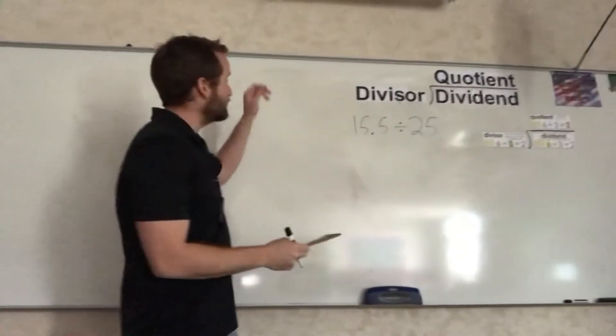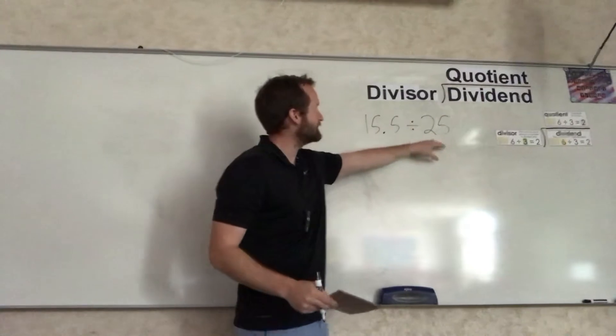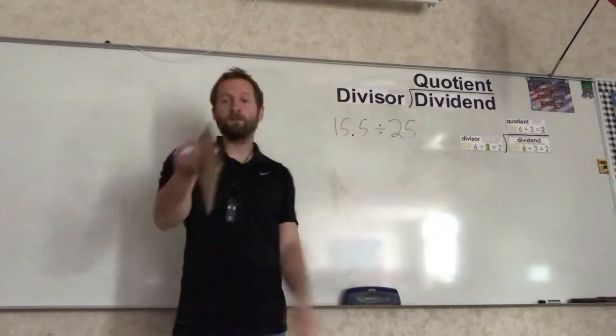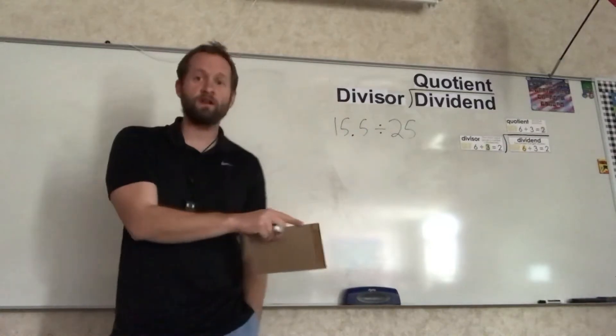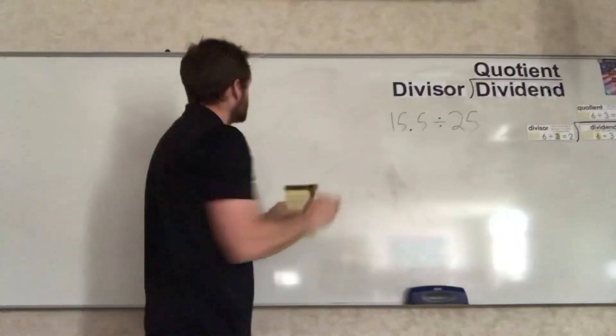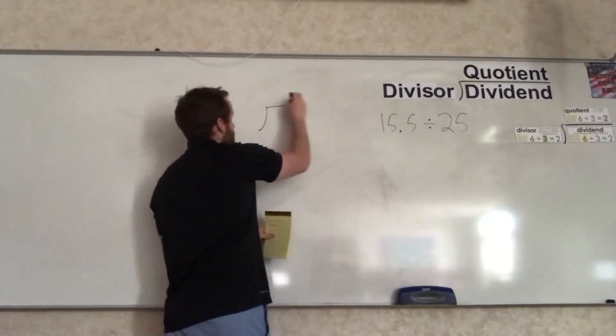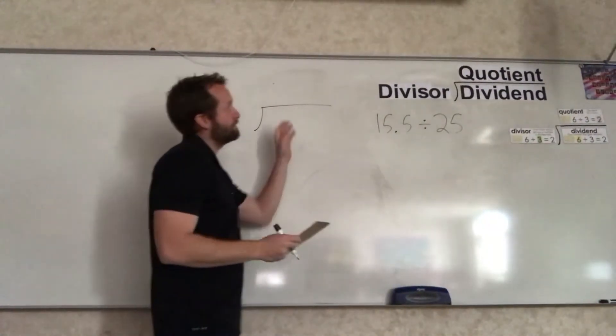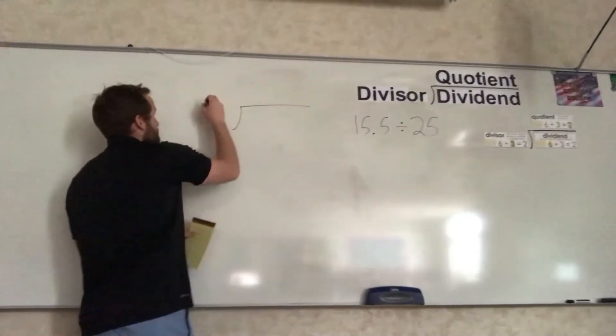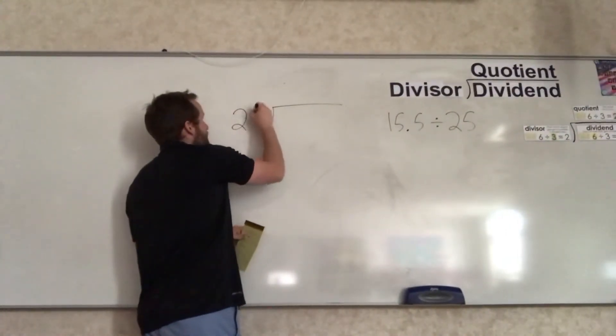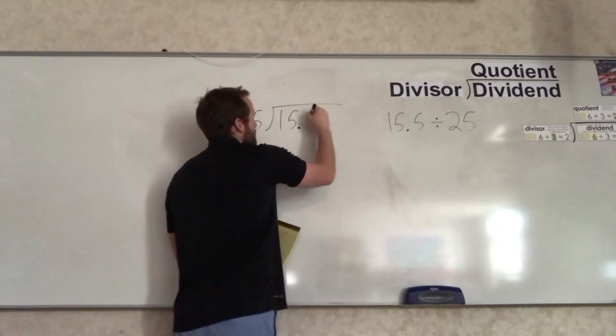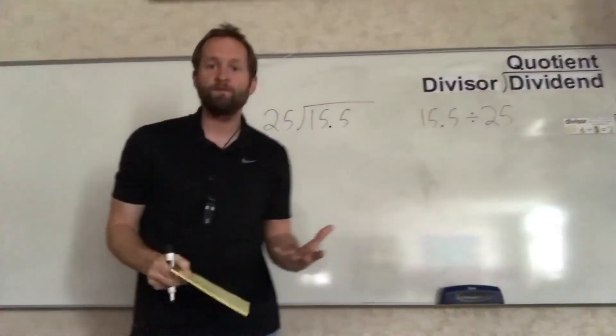The first thing you'll notice, the 25, the divisor, does have a greater value than the dividend. That's typically not what we've done up until this point in math. Let me set up our problem. I'm going to make our division bracket here. The divisor, 25, goes on the outside, and we're going to have 15.5 inside the division bracket.